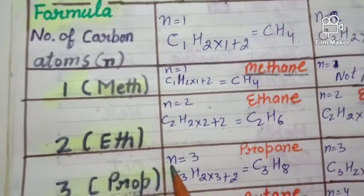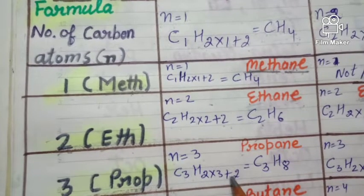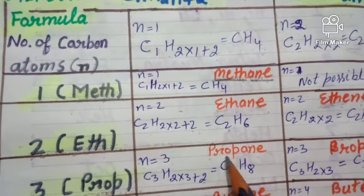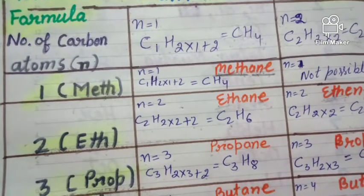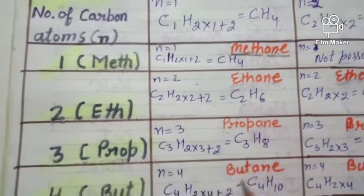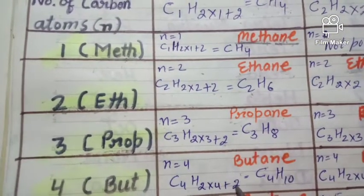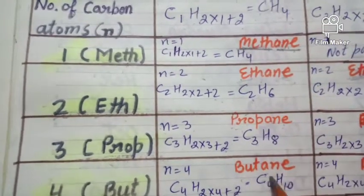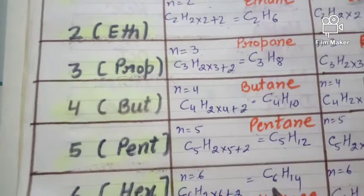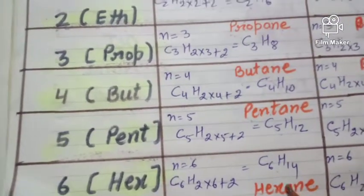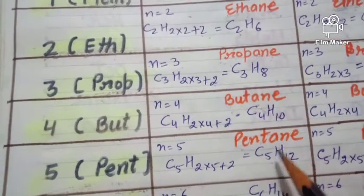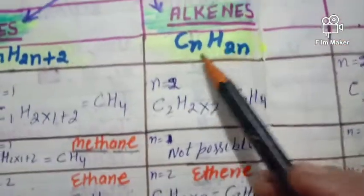For n = 3 in alkanes: C3H(2×3+2) = C3H8; root word 'prop,' suffix '-ane' = propane. Then for n = 4: C4H10 = butane; root word 'but.' For n = 5: C5H12 = pentane; root word 'pent.' For n = 6: C6H14 = hexane; root word 'hex,' suffix '-ane.' These form the homologous series of alkanes.